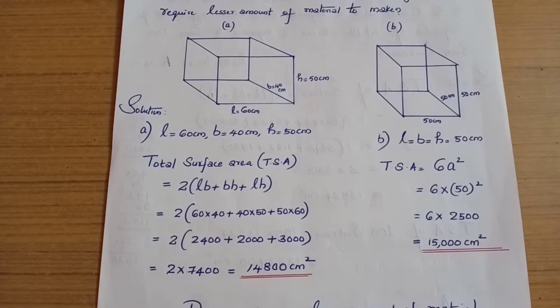2 into (l × b) that is 60 × 40, plus (b × h) that is 40 × 50, plus (l × h) 50 × 60. That is 2 into 2400 plus 2000 plus 3000.